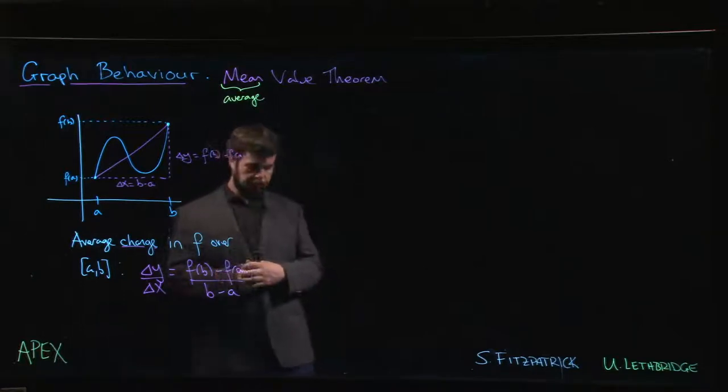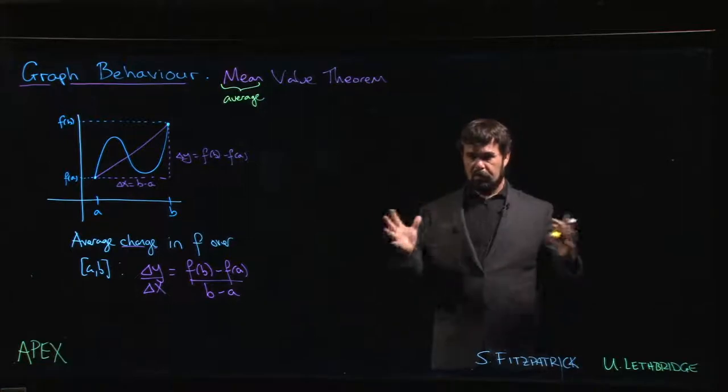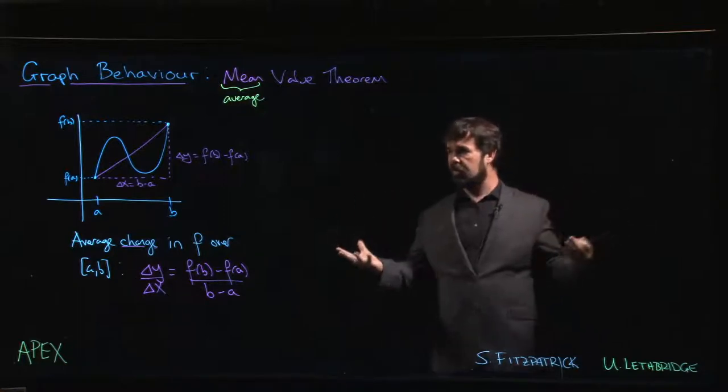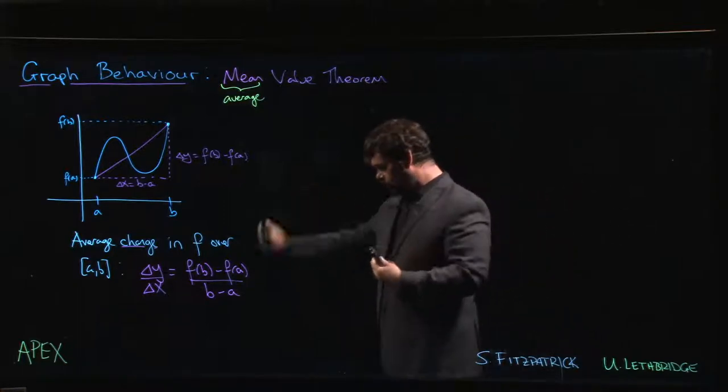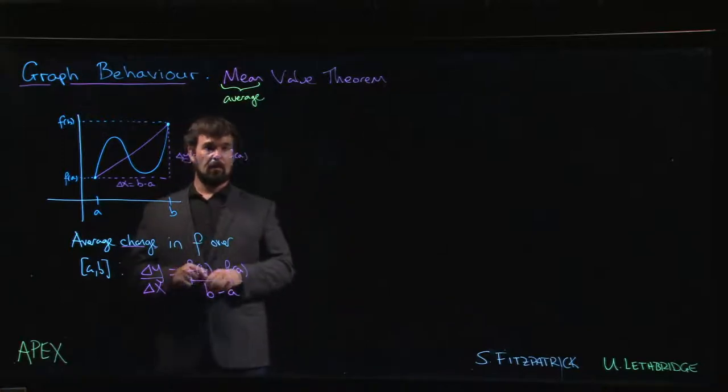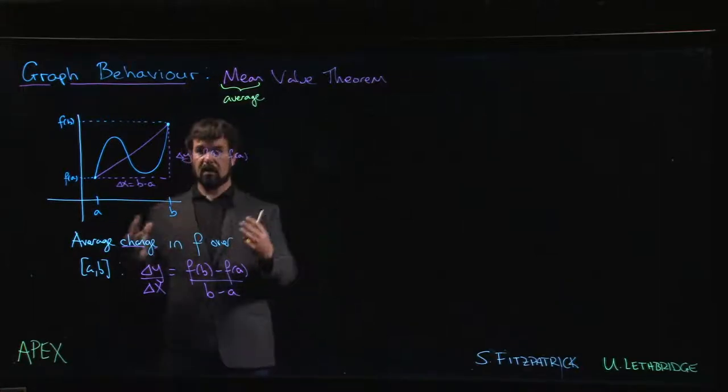So far we've been starting with the function, then plugging it into the definition of the derivative or derivative rules to get the derivative. Knowing the function tells us what the derivative should be. The Mean Value Theorem actually lets us turn things around in certain cases—knowing about the derivative will tell us certain things about the function. That's going to be really useful.